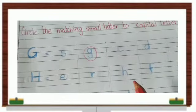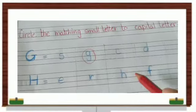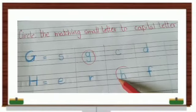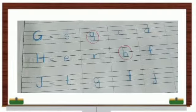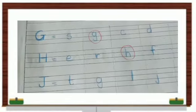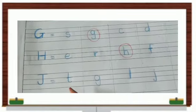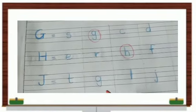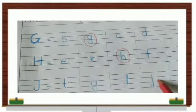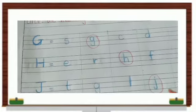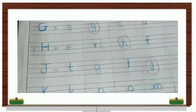Is this H? No. Is this H? No, this is R. Yes, this is H — so they will circle small letter H. Next, this is which letter — J. Where is small letter G? This is small letter G, right? This is which letter — K. Where is K?